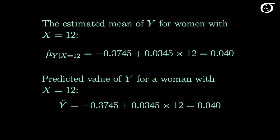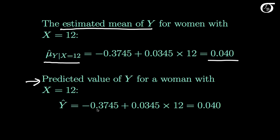Here we have our least squares regression line with that value of x substituted in. We have our estimated mean of y for all the women in our population with an x value of 12 — and that gives us 0.040. We may also want to predict the value of y for a single woman who has an x value of 12. We substitute that into the regression line and get the same value, 0.040. It shouldn't be too surprising that a reasonable predicted value is simply the estimated mean at that point.